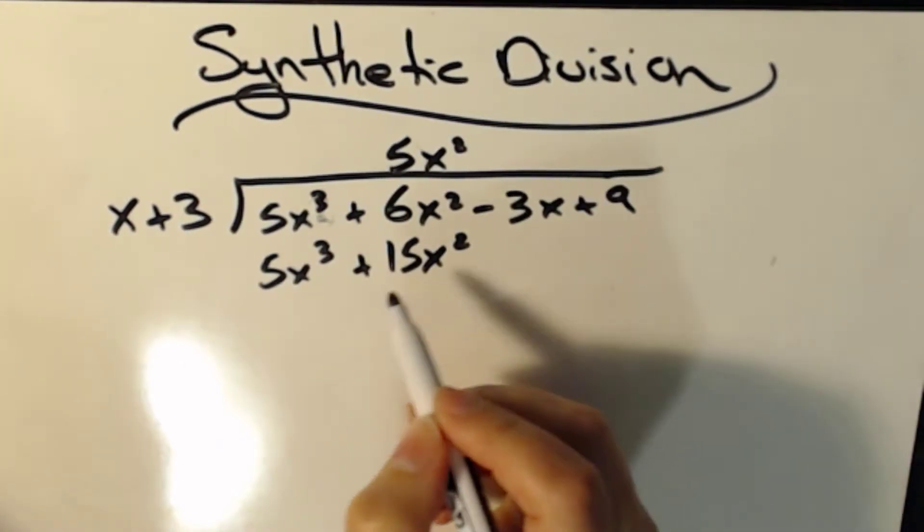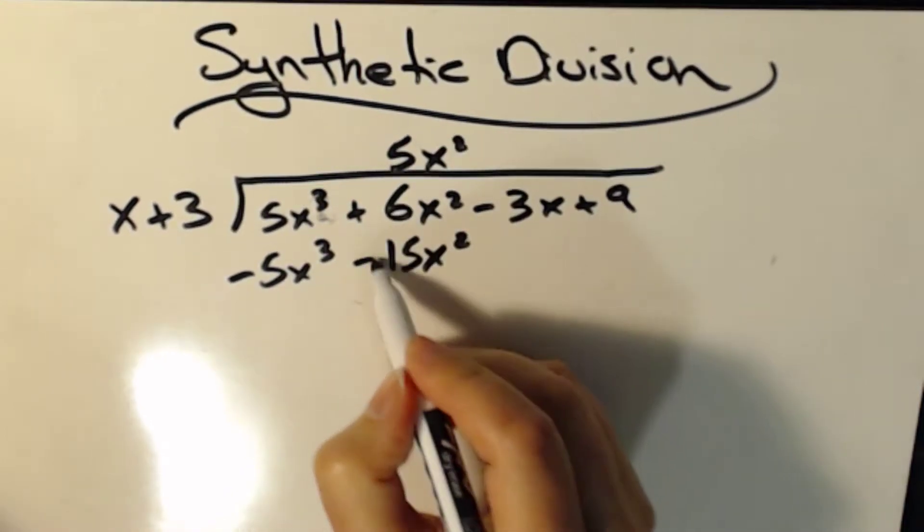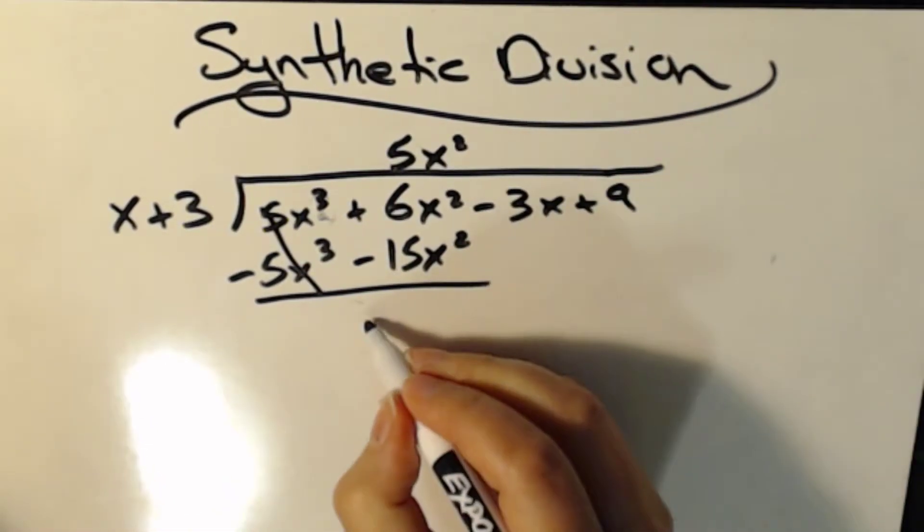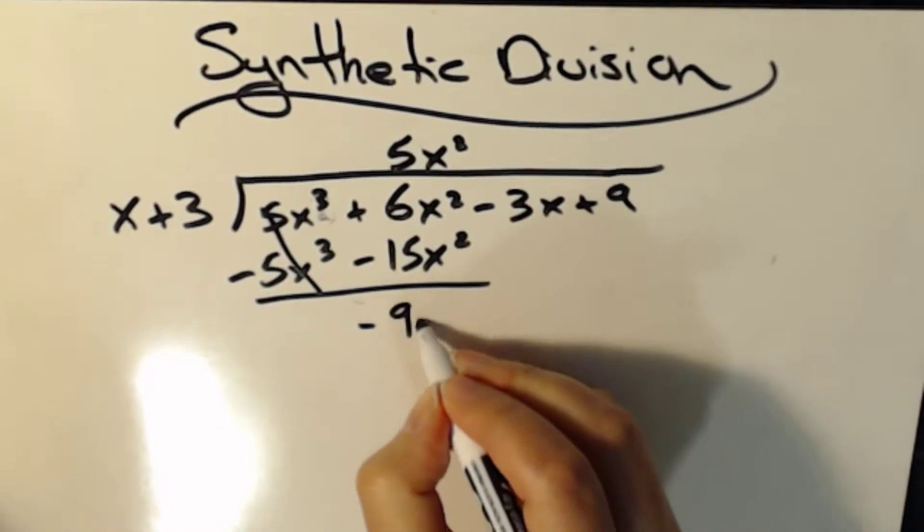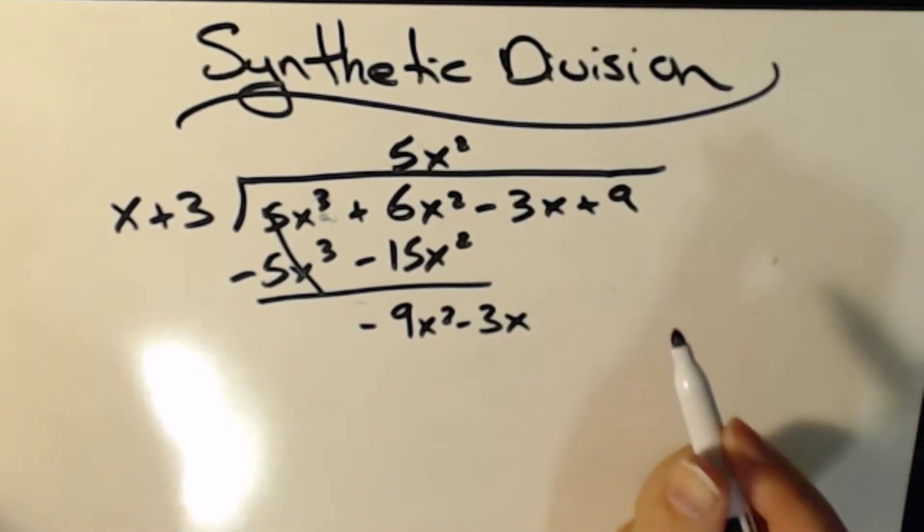So then I take that and multiply it to this whole thing, and I say 5x squared times x is 5x cubed, plus 5x squared times 3 gives me 15x squared. And then I want to subtract these two things. So I'm going to change my signs. Those cancel. And I get negative 9x squared minus 3x, right?